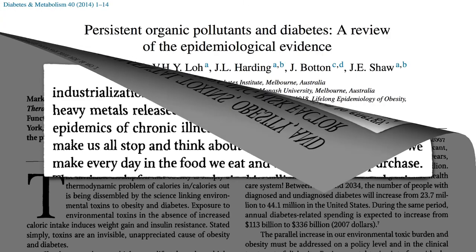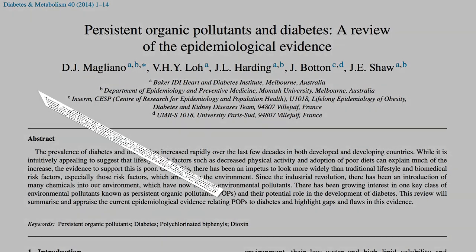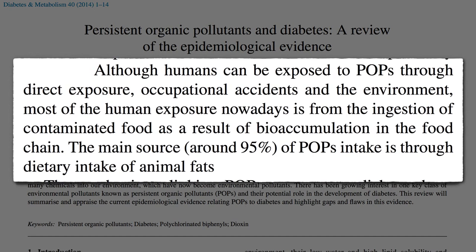As this 2014 review of the evidence on pollutants and diabetes noted, yes, we can be exposed through some toxic spill, but most of human exposure nowadays is from the ingestion of contaminated food as a result of bioaccumulation up the food chain. The main source — about 95% of persistent pollutant intake — is due to dietary intake of animal fat.